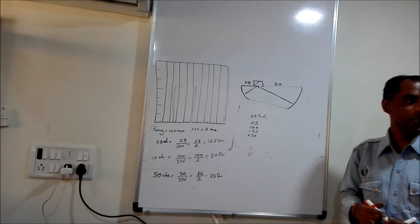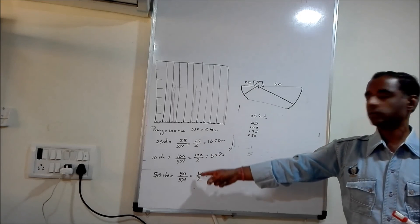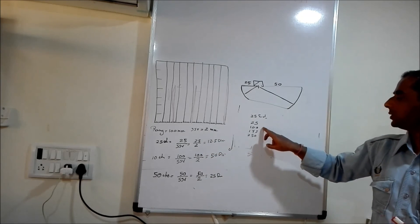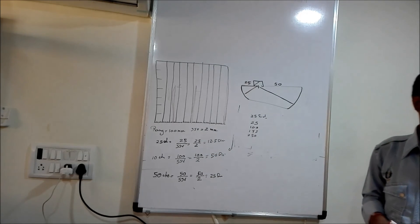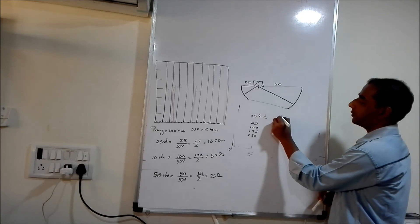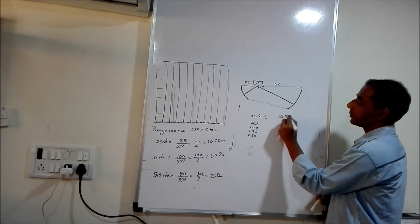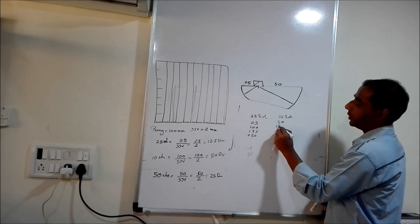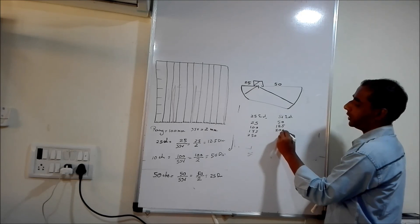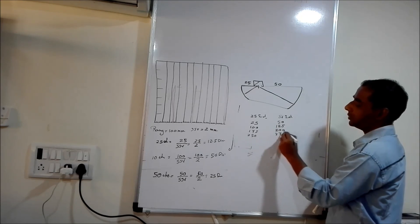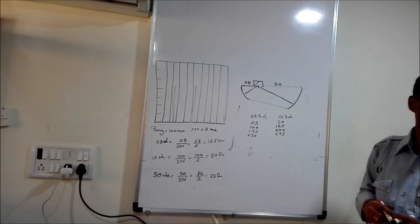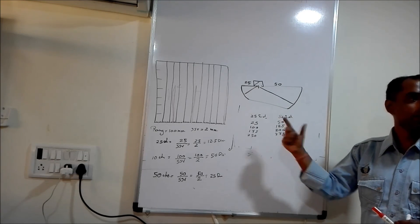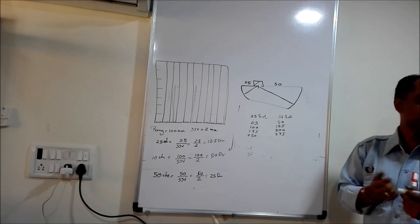So for calibration output, just divide by SSV — divide by SSV and you will get the number of divisions. Same if I am going for the 50 side: first echo at 50, then 125, 200, 275 and so on. So you can cross-verify by rotating the probe.